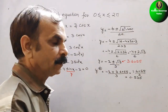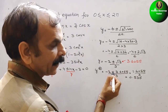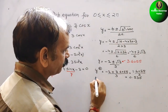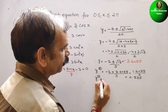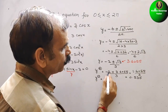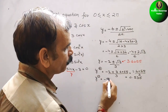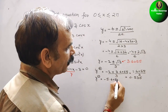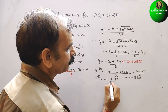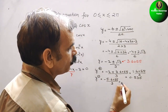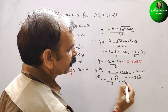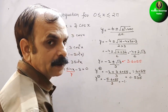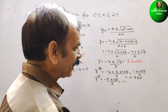For the other case, taking the negative root: y = (−2 − 3.6055) / 3 = −5.6055 / 3 ≈ −1.868. So the second value of y is approximately −1.868.